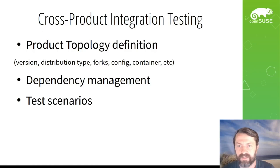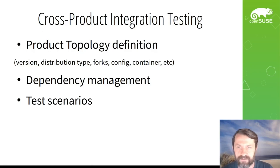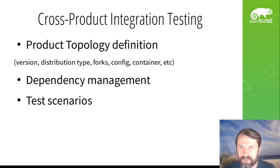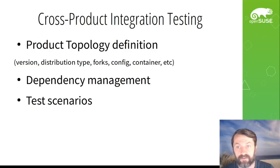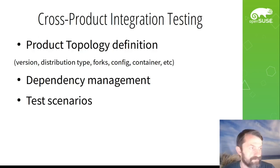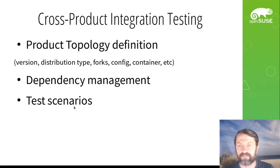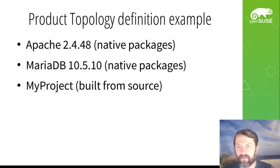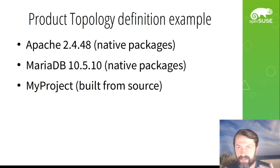When we speak about integration testing, we of course speak about test scenarios. These scenarios usually run on some product topology. This means there is a list of products involved, each at a particular version — maybe a distribution type, maybe some forks or custom builds. Dependency management is also a very complex topic, because for each product definition we may need some tweaks to satisfy dependencies. And of course, test scenarios define expected behavior or demonstrate problems in cross-product communication.